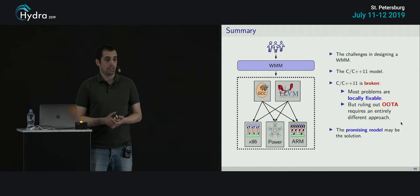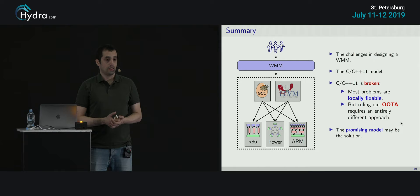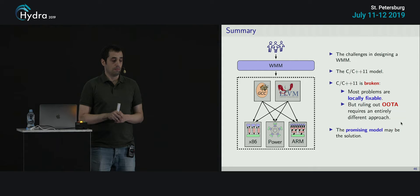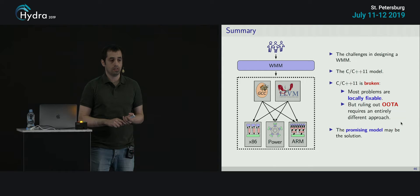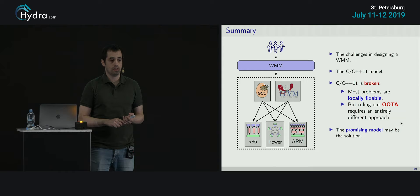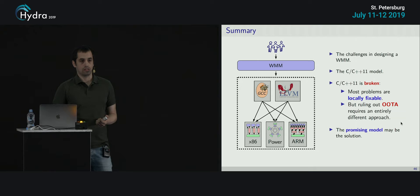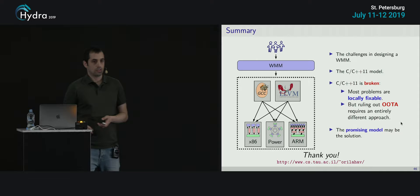To conclude: I described the challenges in weak memory models, described formal aspects of the C memory model specifically, mentioned that it is broken — first the SC problem that will soon be fixed in C++20, and mainly the out-of-thin-air problem which will require either a major change or a performance cost. I also described the promising model, which may be a promising solution for language memory models. Thank you very much.